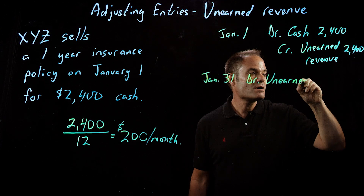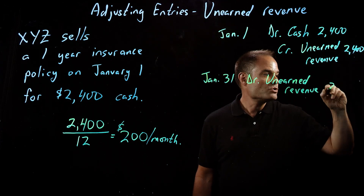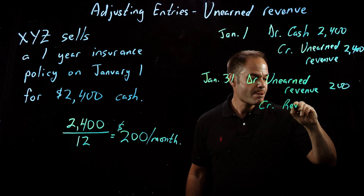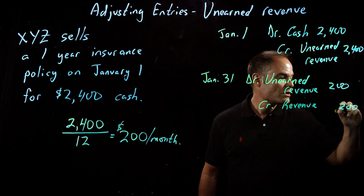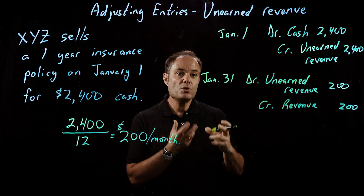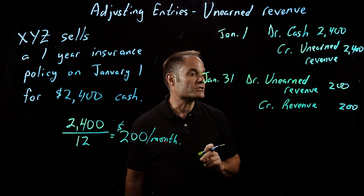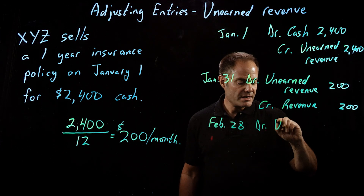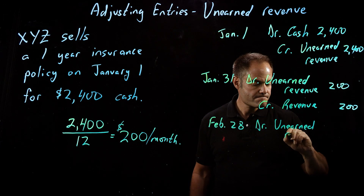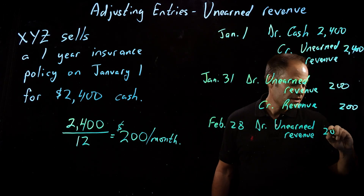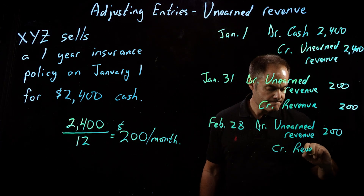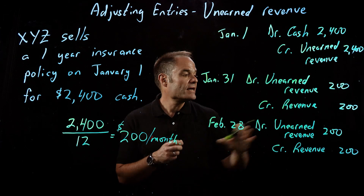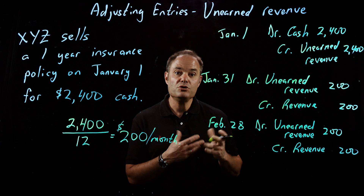On January 31st, they've now delivered one month of this 12-month contract, so they've earned one month of revenue — $200. We'll debit unearned revenue by $200 and credit revenue for $200. So at the end of January, the company has earned $200 of the $2,400 received on January 1st. The same thing will happen at the end of February — they'll enter a new transaction: debit unearned revenue $200, credit revenue $200. At the end of each month, when doing adjusting entries, the company will recognize $200 of revenue that it has now earned.